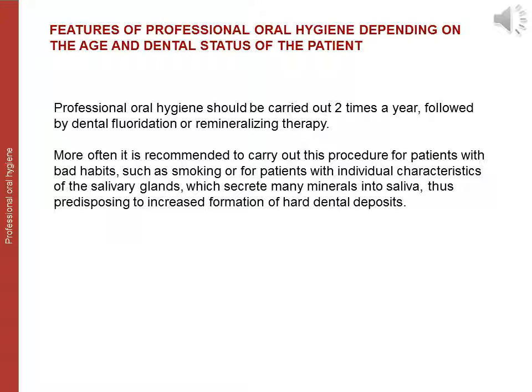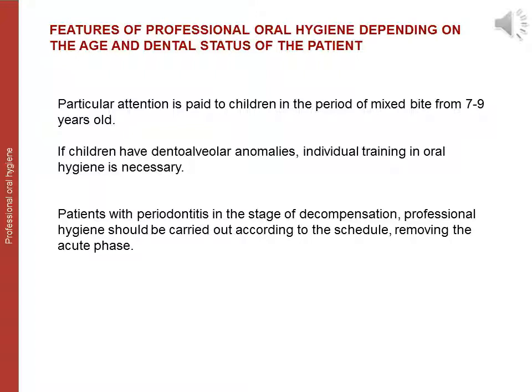Features of professional oral hygiene: depending on the age and dental status of the patient, professional oral hygiene should be carried out twice a year, followed by dental fluoridation or remineralizing therapy. More frequent procedures are recommended for patients with bad habits such as smoking, or patients with individual characteristics of the salivary glands that secrete many minerals, predisposing to increased formation of hard dental deposits. Particular attention is paid to children in the period of mixed dentition (7–9 years old). Patients with dental anomalies require individual training in oral hygiene. For patients with periodontitis in the stage of decompensation, professional hygiene should be carried out according to schedule after removing the acute phase.